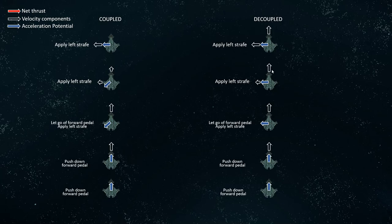After some time, we still have the same amount of forward velocity, but we're also attaining increased leftward velocity. In the final state, you can see that our final velocity will be a combination of our forward and our leftward velocities. We're continuing to accelerate because we assume that we didn't let go of the left strafe input.